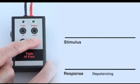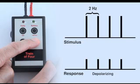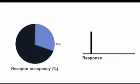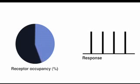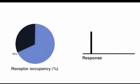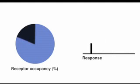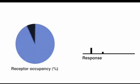There is typically no fade with a depolarizing block; the amplitude of each twitch is constant but diminished proportionally. Up to 70% of nicotinic acetylcholine receptors can be blocked without any apparent decrease in the train of four ratio. As the neuromuscular block progressively increases, the train of four ratio progressively fades, and all four twitches become undetectable after more than 95% of the receptors are blocked.